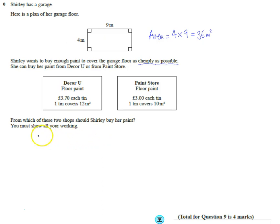So let's think if we're going to do it for Decor U. One tin covers 12 meters squared, and I want to get to 36. So one tin is going to cover 12 meters squared, two tins we're going to cover double the amount, 24 meters squared, so three tins is going to cover 36 exactly.